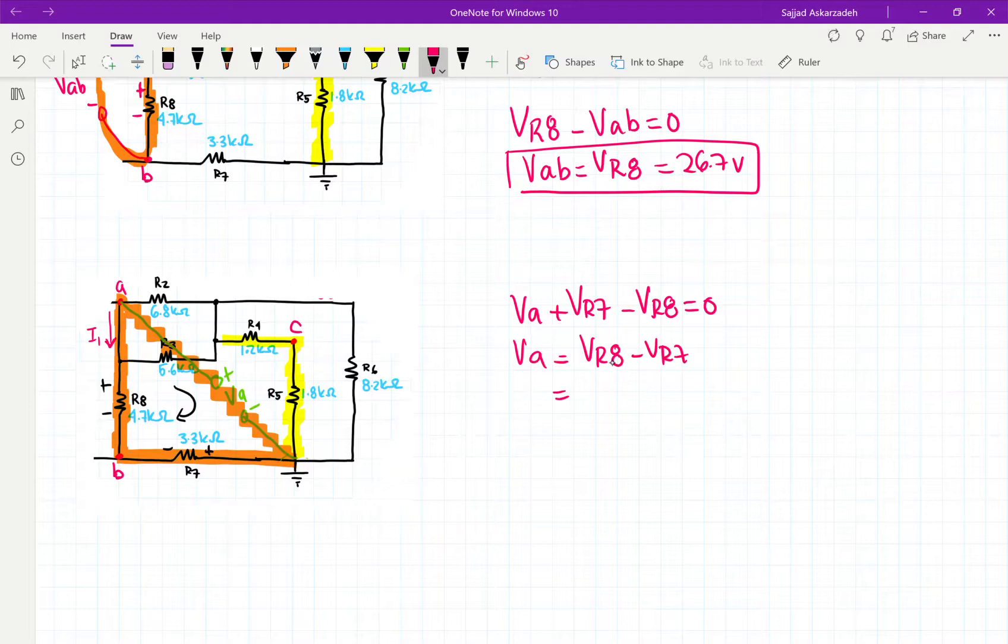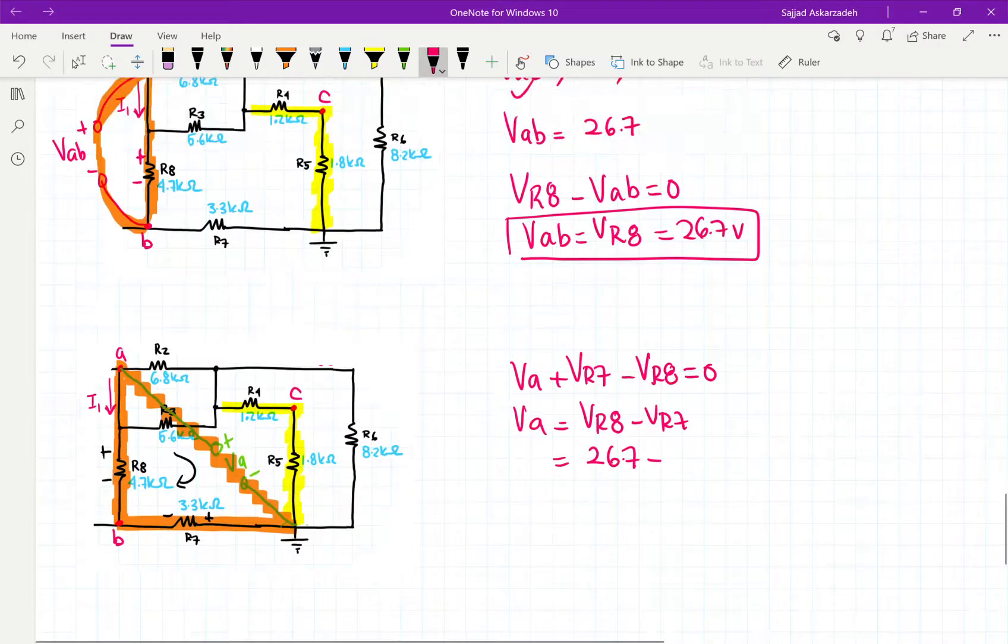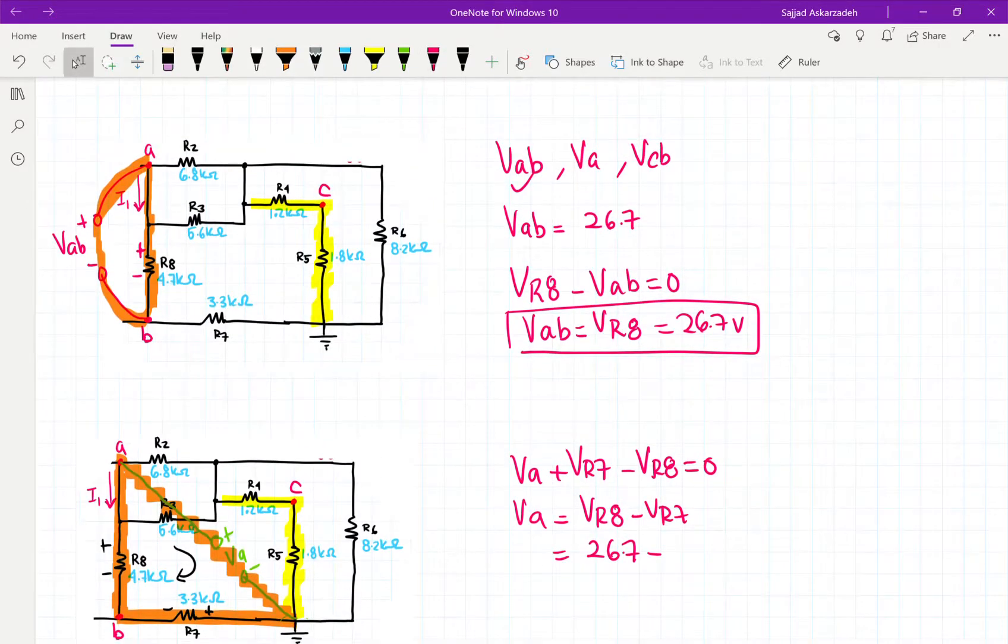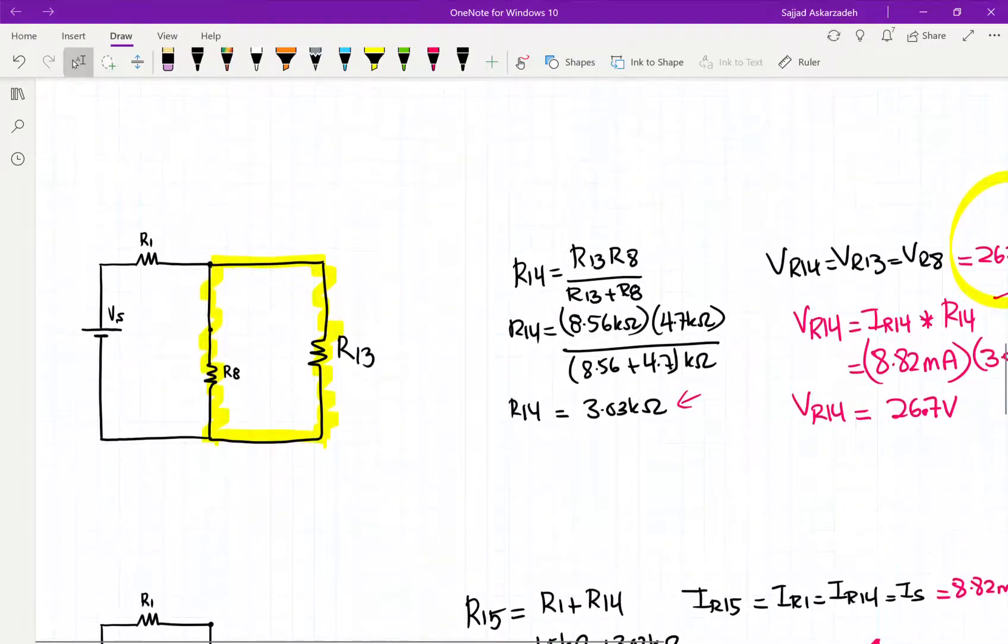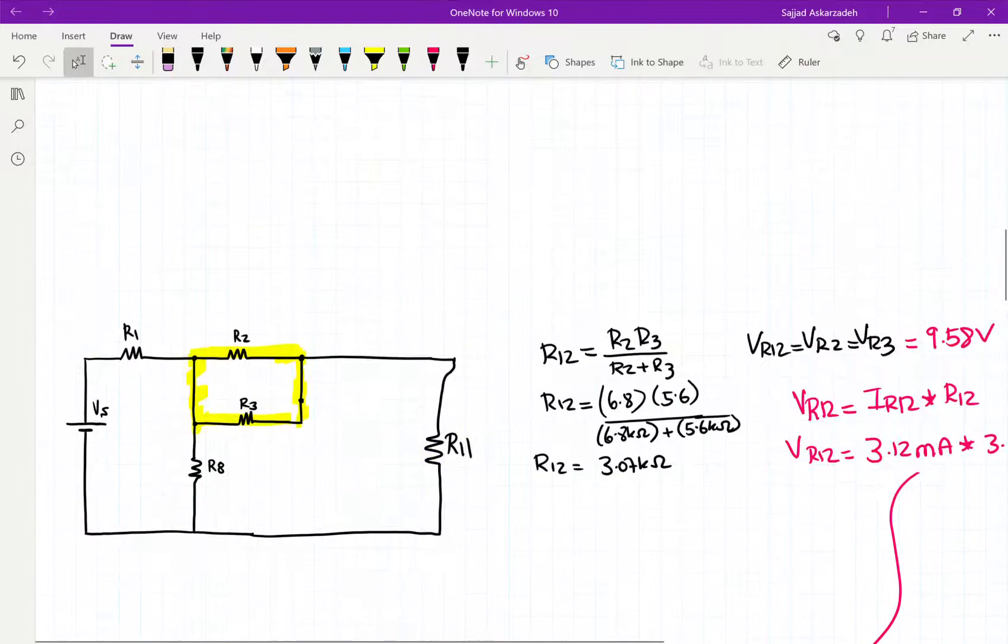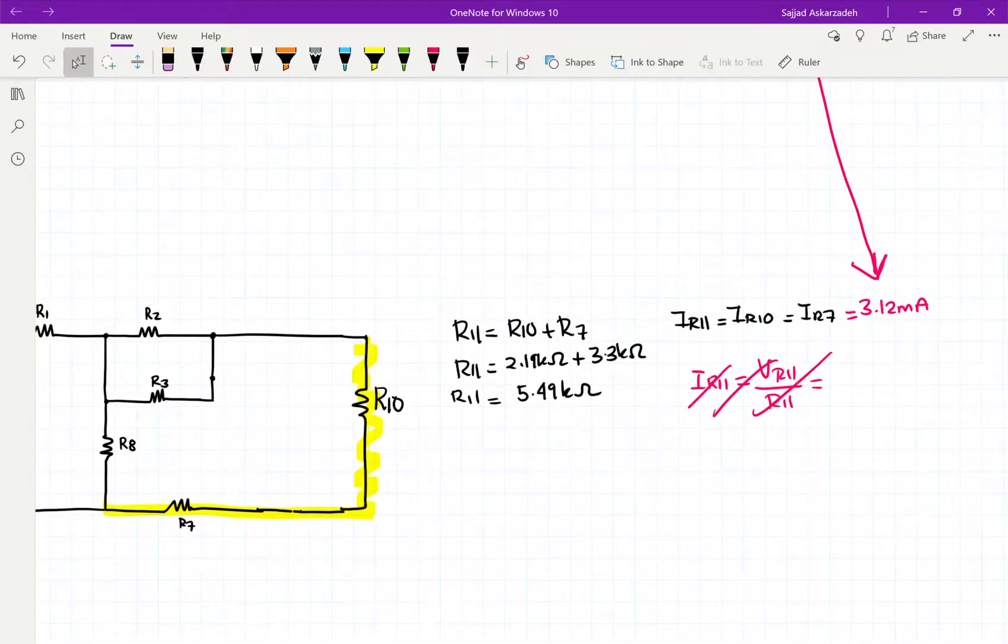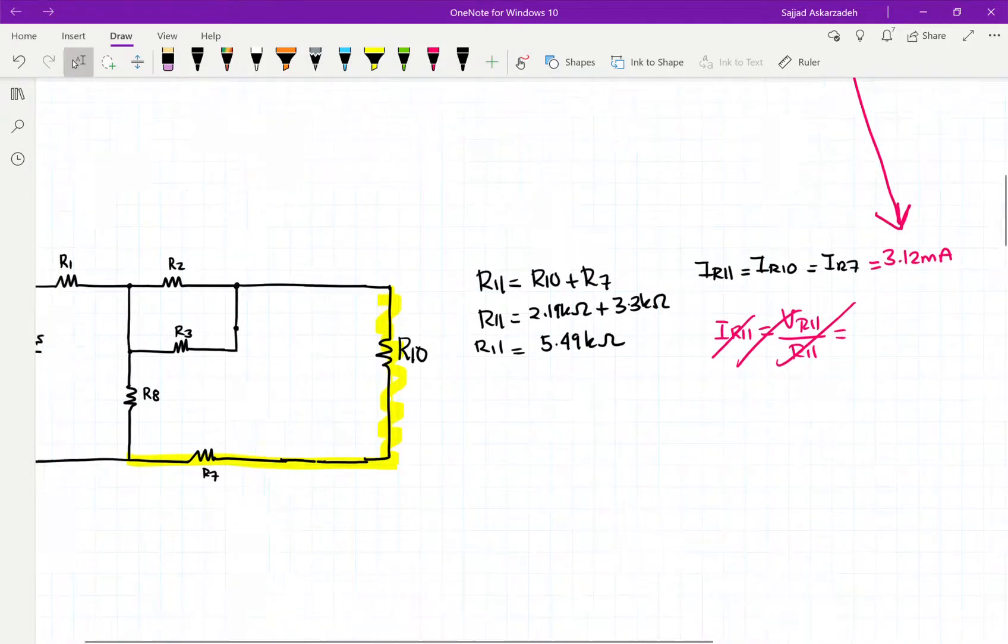And we already know what VR8 is. It's 26.7. VR8 is 26.7. And then VR7, we know what VR7 is. We know the current. It's 3.12. We know what the resistor value is, the resistance. The resistor value is 3.3 kilo ohms.